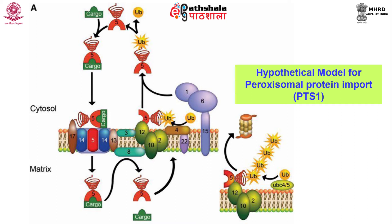The three ring finger proteins — pex 2, pex 10, and pex 12 — are proposed to serve as E3 ligases. The ubiquitinated pex 5 is pulled out of the membrane by AAA proteins pex 1 and pex 6, which are associated with the peroxisomal membrane via pex 15. When pex 5 recycling fails, it becomes polyubiquitinated by UBC 4/5 and degraded by the proteasome.